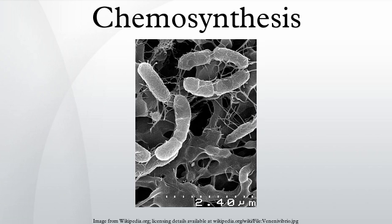In 2013, researchers reported their discovery of bacteria living in the rock of the oceanic crust below thick layers of sediment, and apart from the hydrothermal vents that form along the edges of tectonic plates. Preliminary findings are that these bacteria subsist on hydrogen produced by chemical reduction of olivine by seawater circulating in small veins that permeate the basalt comprising oceanic crust. The bacteria synthesize methane by combining hydrogen and carbon dioxide.